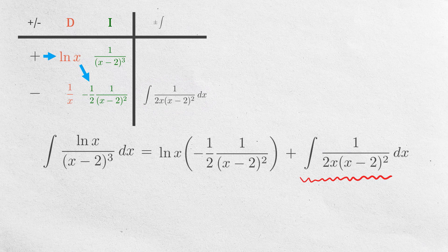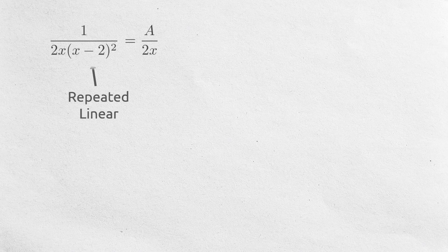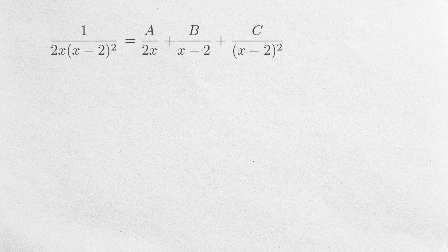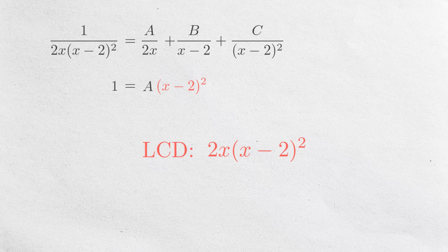We can now integrate this by partial fraction decomposition. The factor 2x is linear, so we get A over 2x. The x minus 2 squared is a repeated linear factor, so we write this. We can then multiply the whole equation by the LCD 2x times x minus 2 squared. Canceling the denominators, we can get 1 on the left-hand side of the equation, equals A times the factor that doesn't get cancelled, x minus 2 squared, then plus B times 2x times x minus 2 and plus C times 2x.